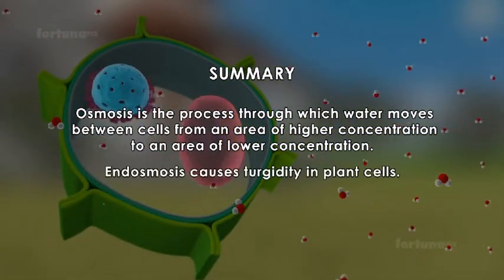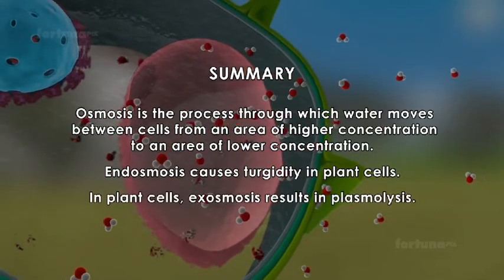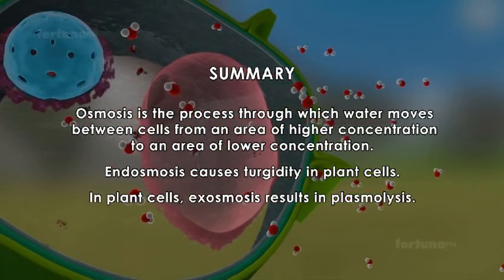Endosmosis causes turgidity in plant cells. In plant cells, exosmosis results in plasmolysis.